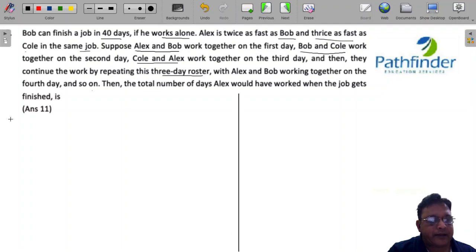How do you tackle such a question? Alex is twice as fast as Bob and thrice as fast as Cole in the same job together. So we can see that Alex is two times somebody and three times somebody.